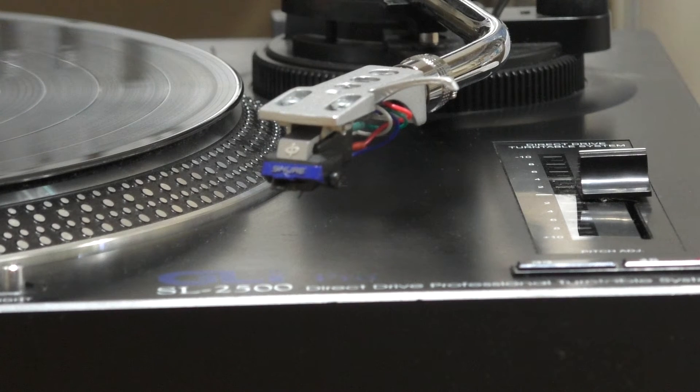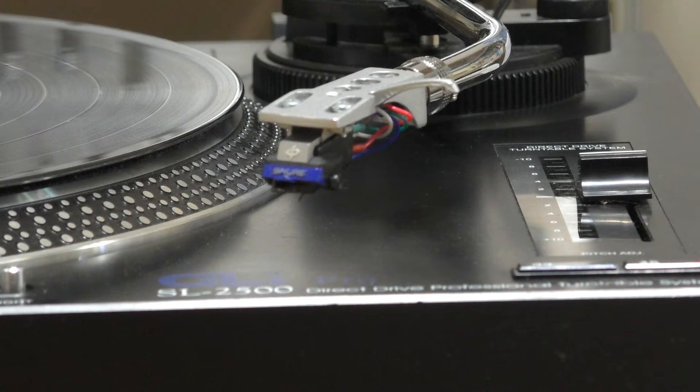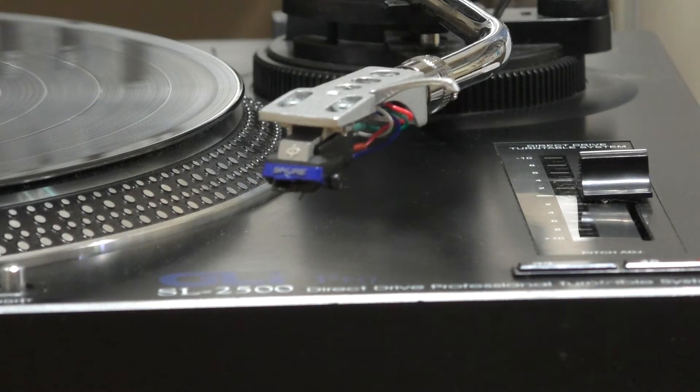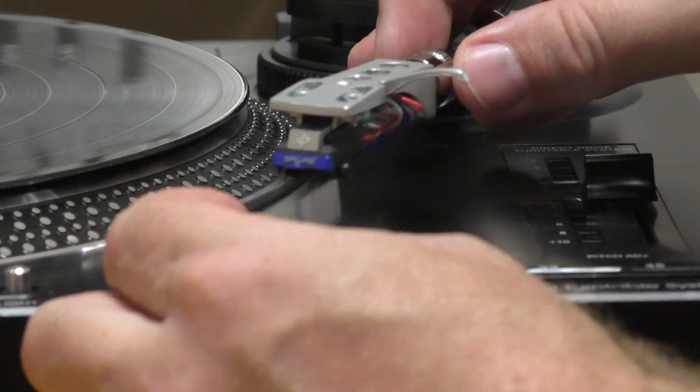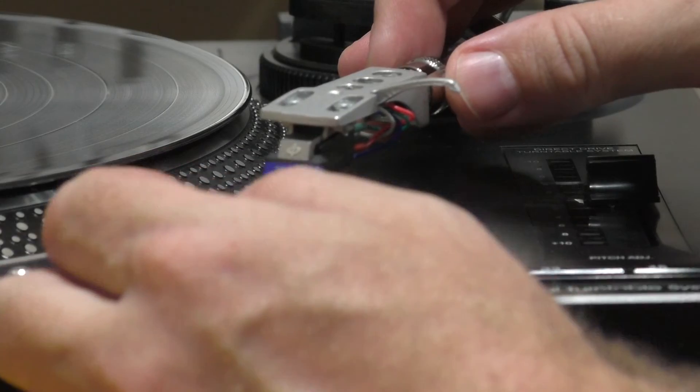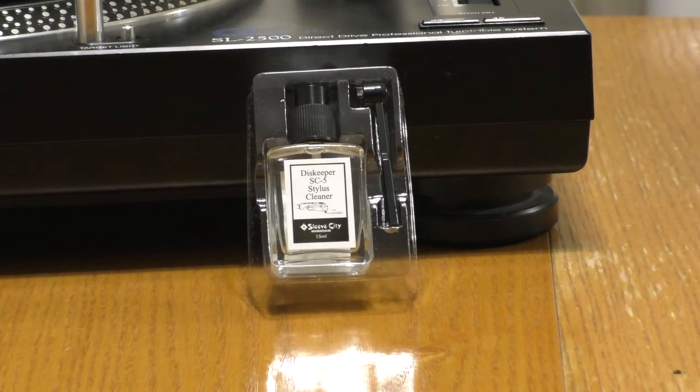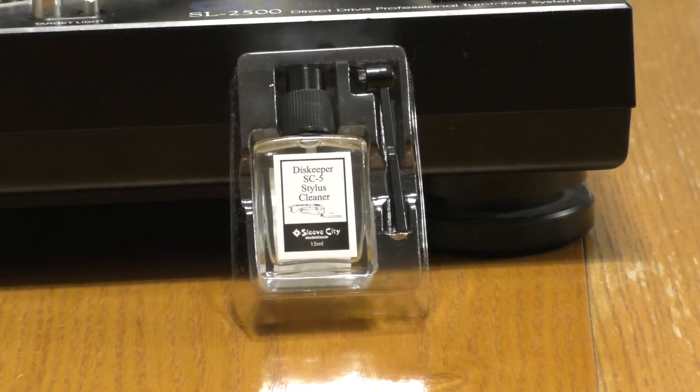Not only should your records be clean for optimal playback, your stylus should be too. The needle can pick up dirt and lint as it travels through the record grooves. A brush will remove this dirt and lint. You can also get a wet clean stylus care kit that does even better at cleaning your needle.